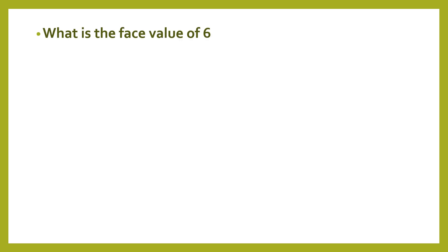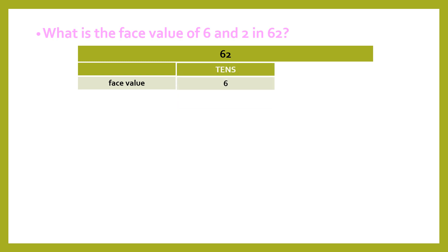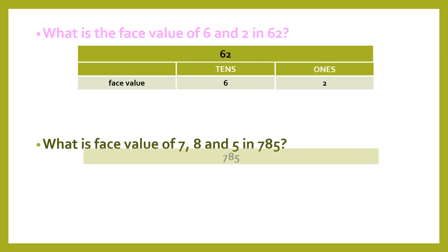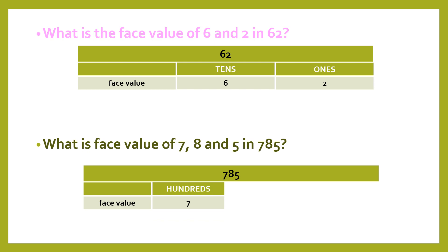What is the face value of 6 and 2 in 62? Let's divide them on the basis of tens position and ones position. 6 is present at the tens position and 2 is present at the ones position. The face value of 6 will remain 6, and 2 will always remain 2, since face value is independent of the position and is the numerical value of the digit itself.